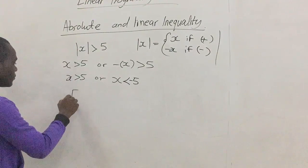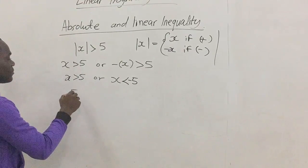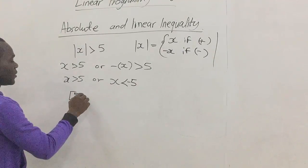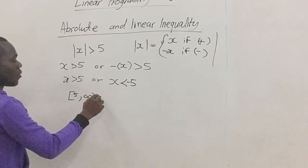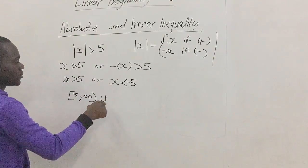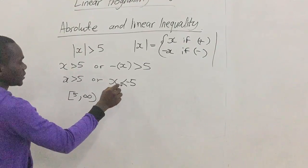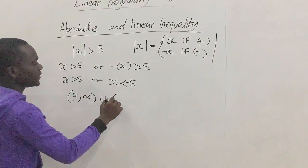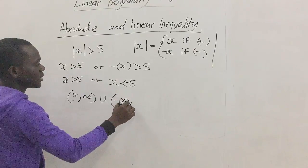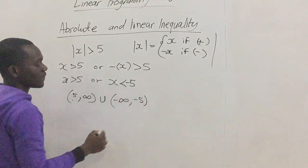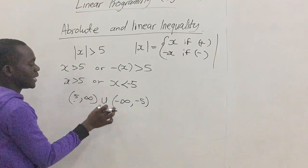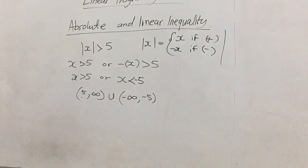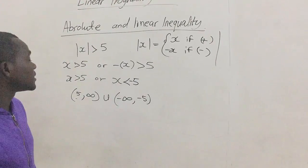To write this in interval form, x greater than 5 gives us the interval from 5 to positive infinity, union with negative infinity to negative 5. We use open intervals with open parentheses. So this is our solution in interval form. This is just a basic absolute inequality, so let's take another one that is a little bit more complex.